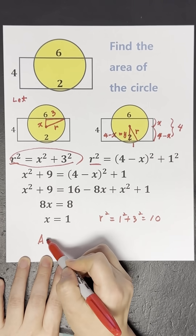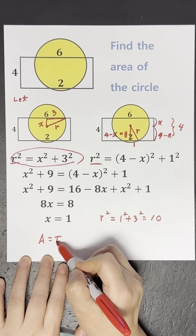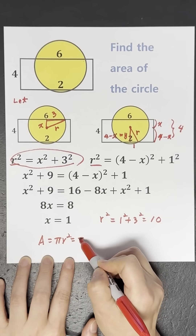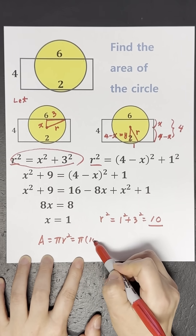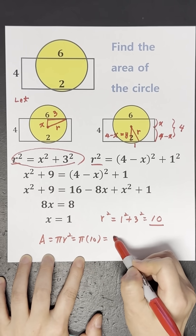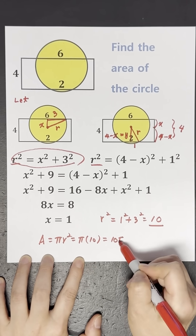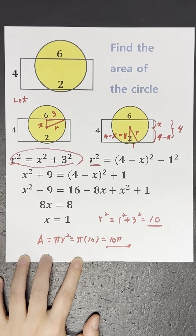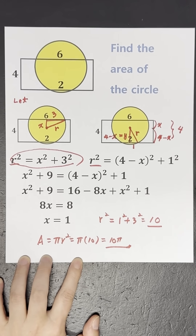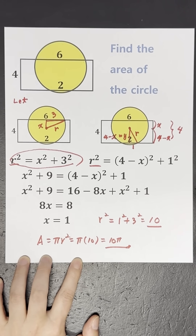Therefore, the area is 10 pi. Click the link in the comments for step-by-step details on how this works.